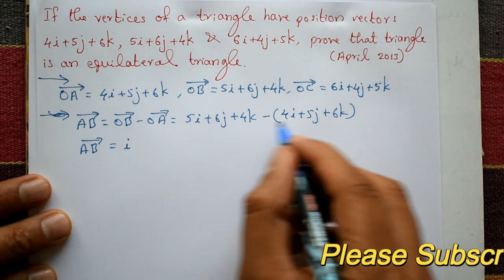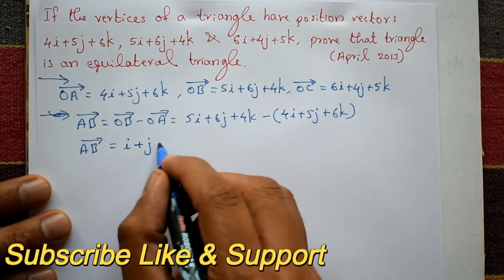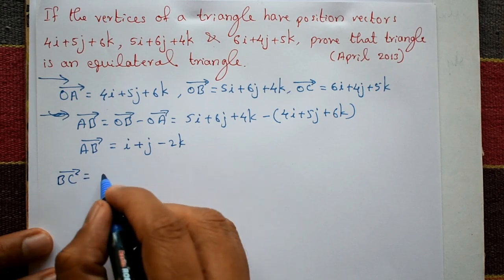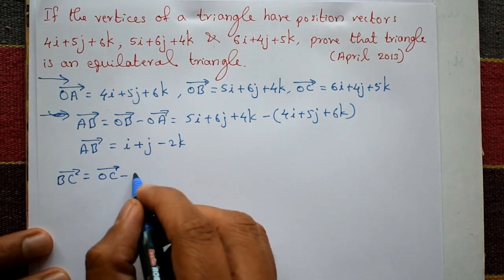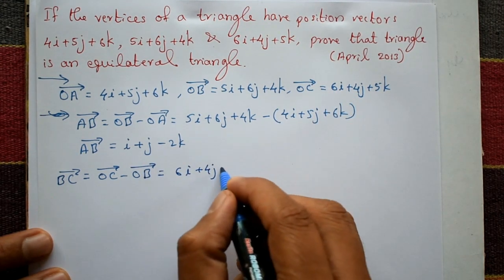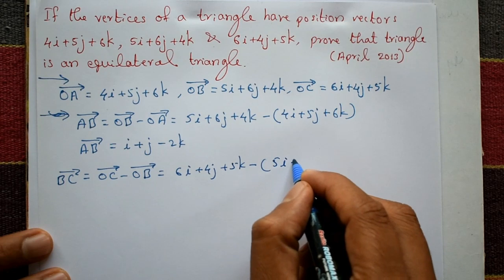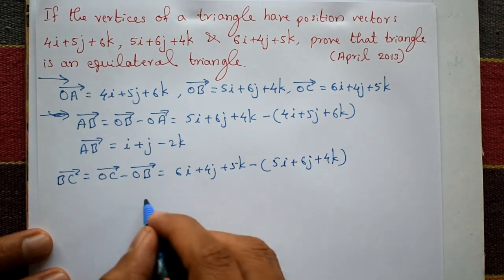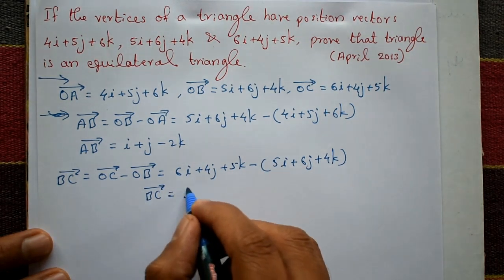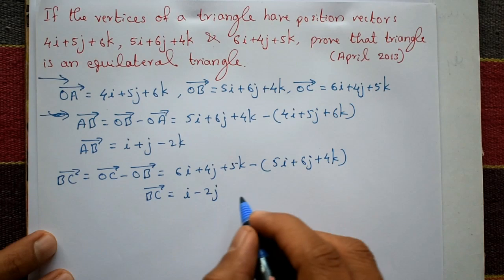So vector AB equals (5 minus 4)i + (6 minus 5)j + (4 minus 6)k, giving i + j - 2k. Next, vector BC equals OC minus OB. OC is 6i + 4j + 5k, minus OB which is 5i + 6j + 4k. So vector BC equals (6-5)i + (4-6)j + (5-4)k, giving i - 2j + k.